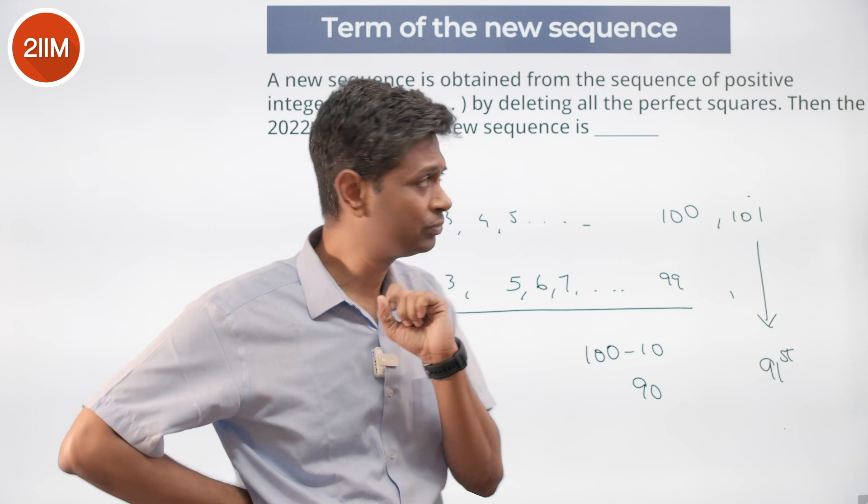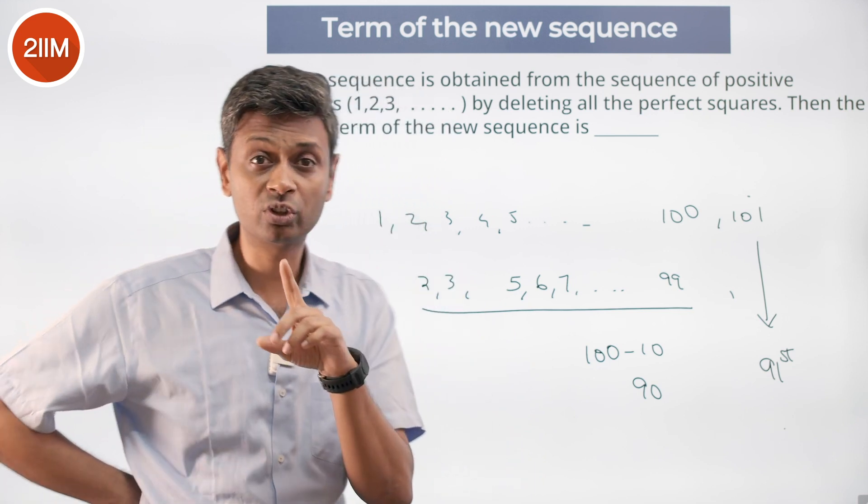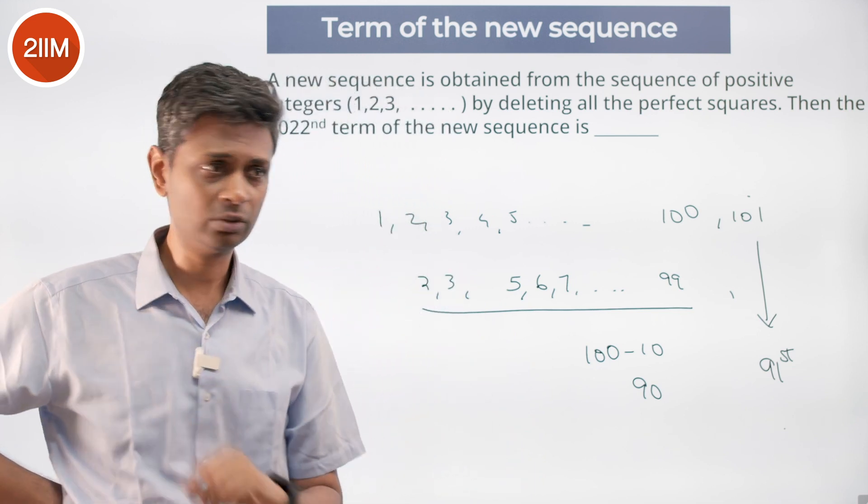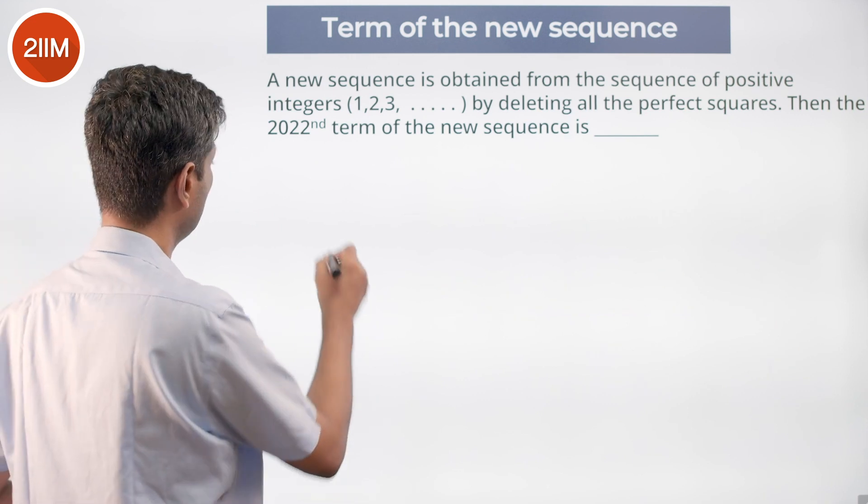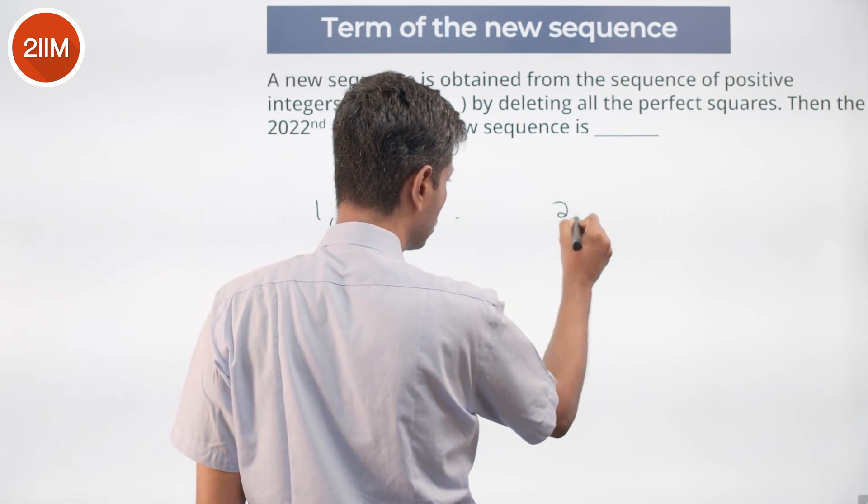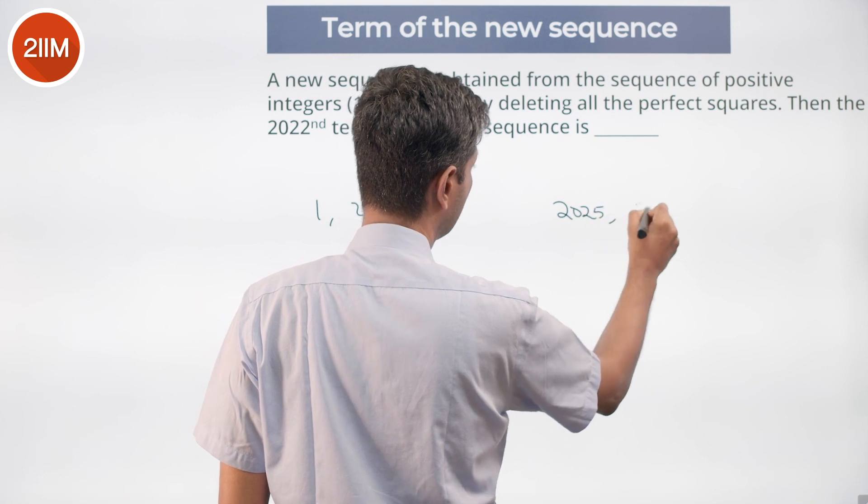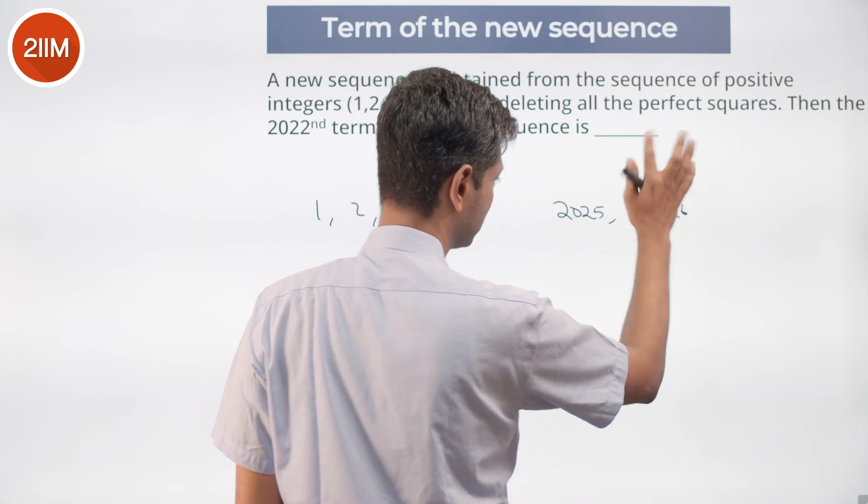Close to 2022, 2025 is a square. 45² is 2025. So what I am going to do: I am going to think about 1, 2, 3, up till 2025 and then the 2026 number.